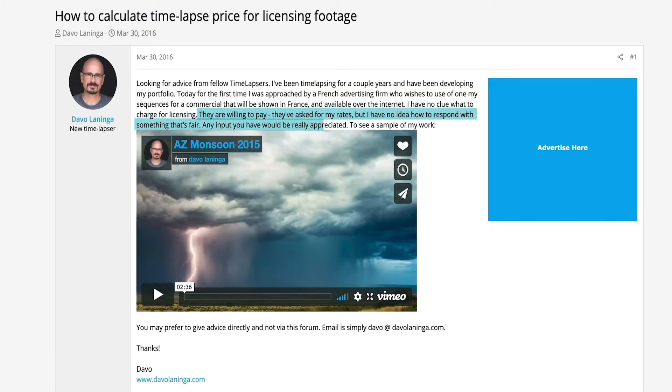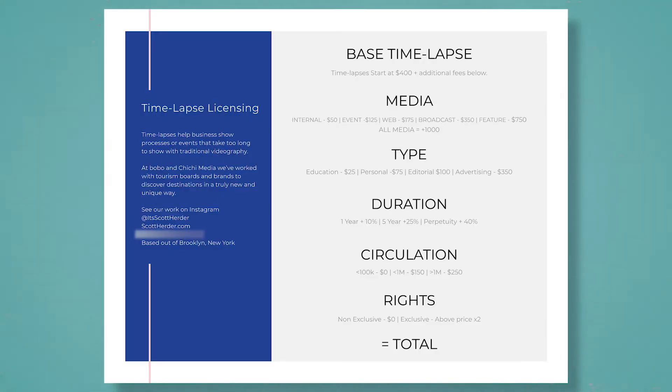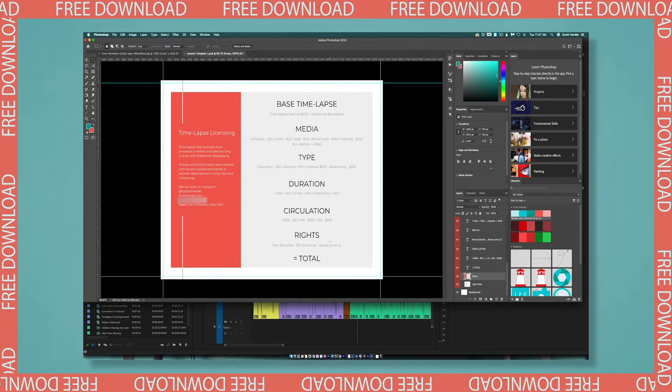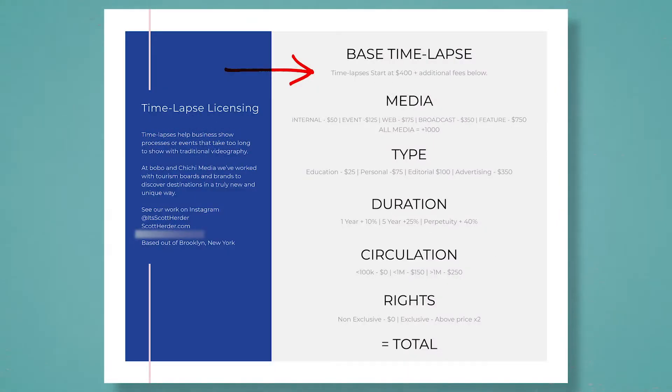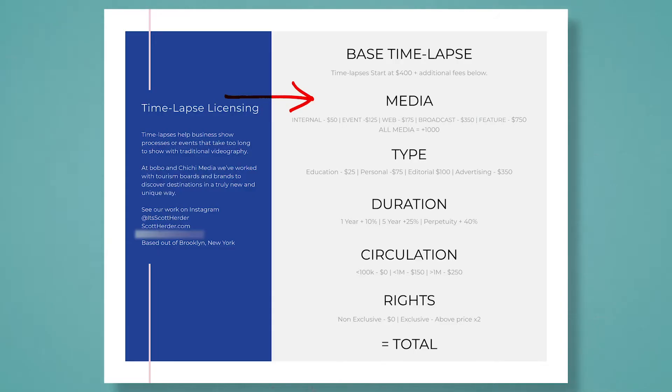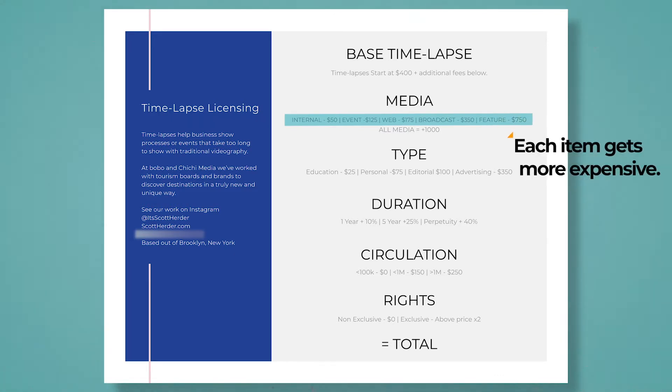So here's the sheet I send out when asked for timelapse rates. I've made it downloadable and customizable — just adjust the colors in Photoshop to your branding. For any timelapse, the base is $400. Since clients know what licensing they want, they can add up the applicable fees to get an idea of the total cost. For internal use with limited audience, I charge $50, adjusting upward based on exposure. The bigger the audience, the bigger the price. Type, duration, and circulation are self-explanatory. For exclusive rights, I double the whole fee, since I can never sell that footage again.